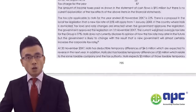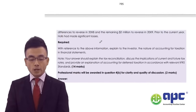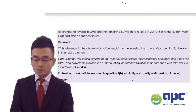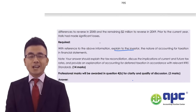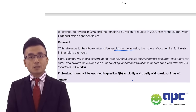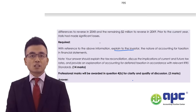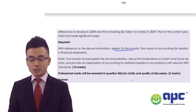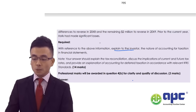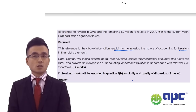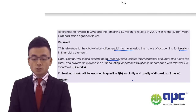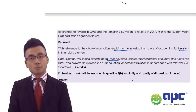This company is called Hulse Group and we are required, with reference to the above information, to explain to the investor. Our job is to explain to shareholders — not in very technical language — but for every bit of information presented, you have to explain what's going on and why. The nature of accounting for taxation in the financial statements includes the current tax payable based on taxable profit, the under- or over-provision of income tax expense related to last year's account, and the deferred tax implications. Your answer should explain the tax reconciliations, and that will be the information presented by the examiner.